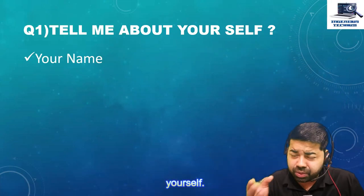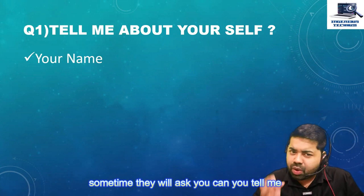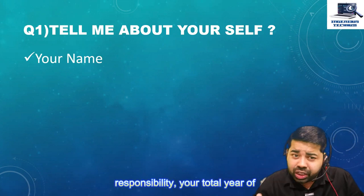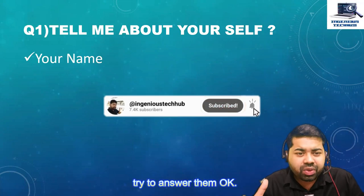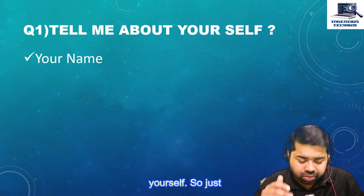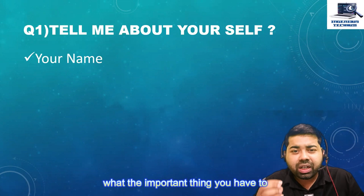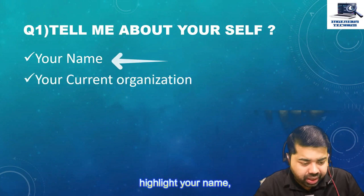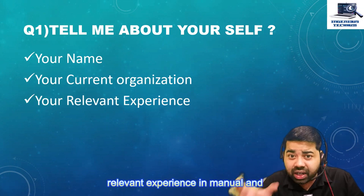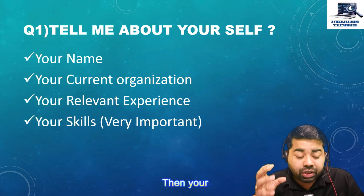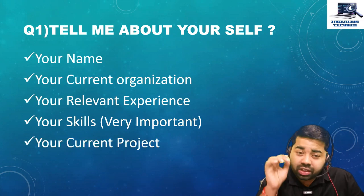The first question is 'Tell me about yourself.' This question is repeated often — sometimes they will ask about your profile, roles and responsibilities, and total years of experience. Keep 'tell me about yourself' very short. The important things to highlight are your name, your current organization, your total and relevant experience in manual and automation testing, and your primary and secondary skill sets.